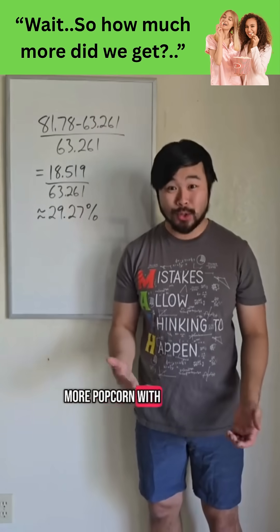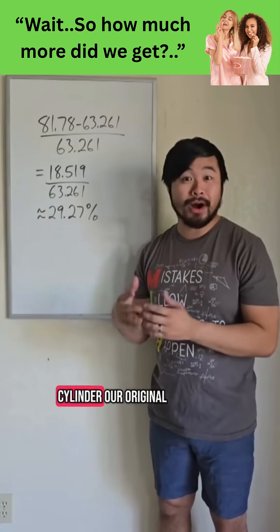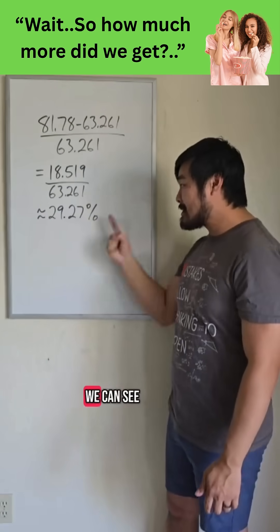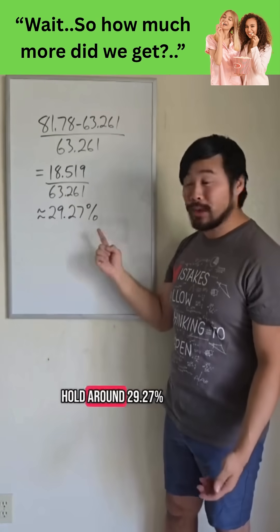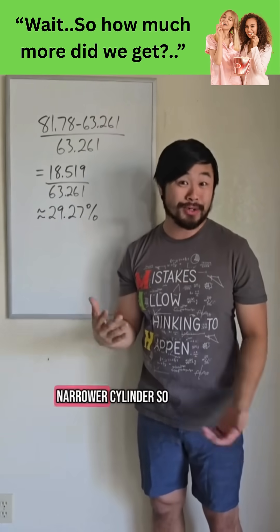But how much more popcorn would the shorter, wider cylinder hold? Well, let's call the taller, narrower cylinder our original. If we do the difference over original, we can see that the shorter, wider cylinder will hold around 29.27% more popcorn than the taller, narrower cylinder.